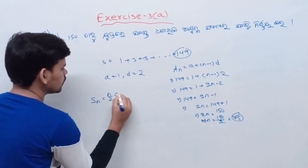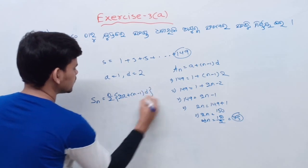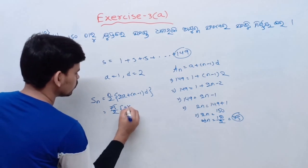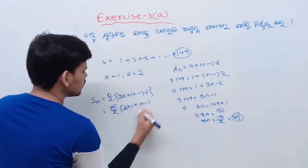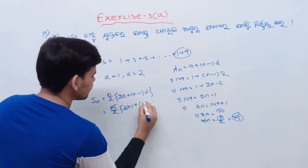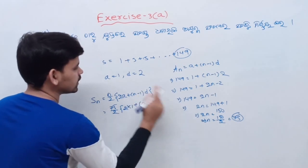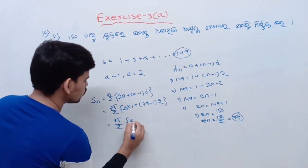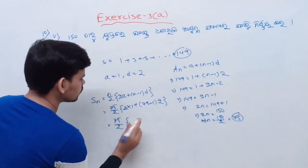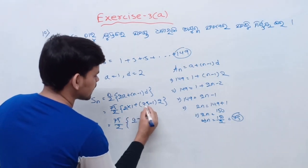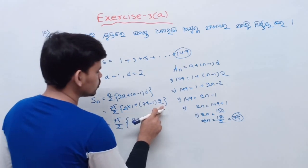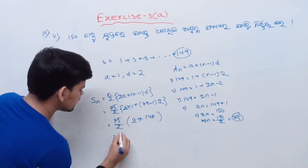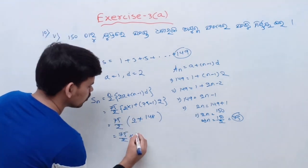N by 2 into 2A plus N minus 1 into D. So N is 75 by 2, 2 into A is 1, plus N minus 1 is 75 minus 1. D is 2. So 75 by 2 into 2 plus 74 into 2, which is 148. So 75 by 2 into 150.